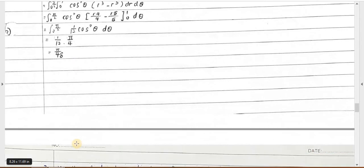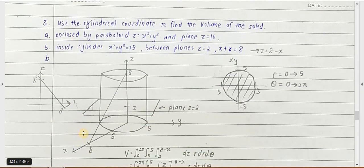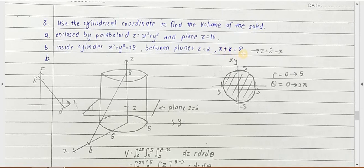Next, we move on to question 3 about finding volumes. You have questions 3A and 3B. You must use cylindrical coordinates to find the volume of the solid enclosed by a paraboloid and the plane z equals 16, and for 3B, the solid inside a cylinder with radius 5, between the plane z equals 2 and x plus z equals 8.